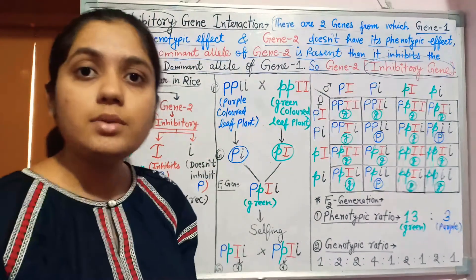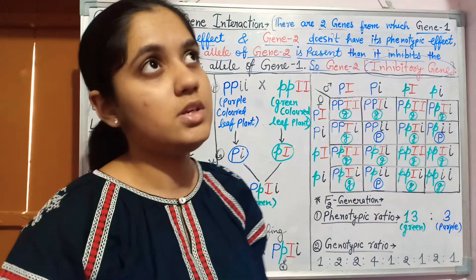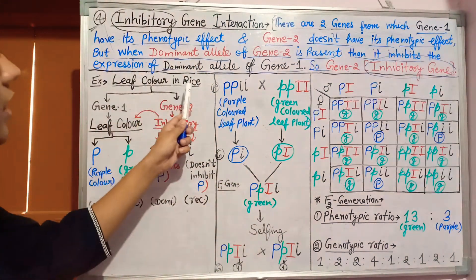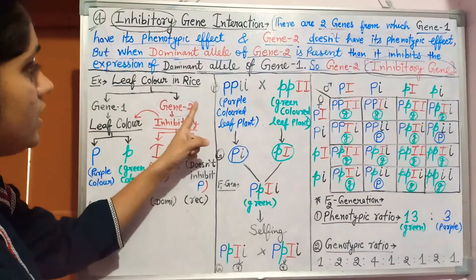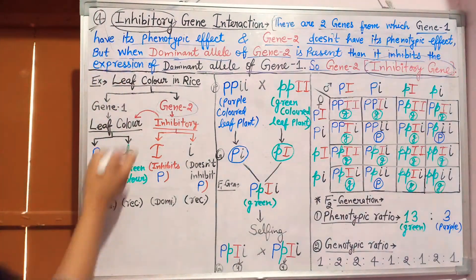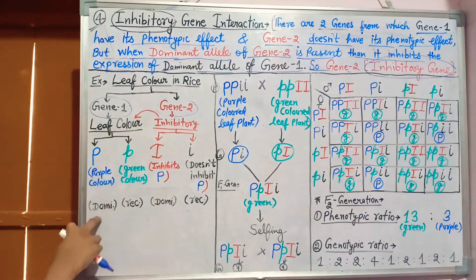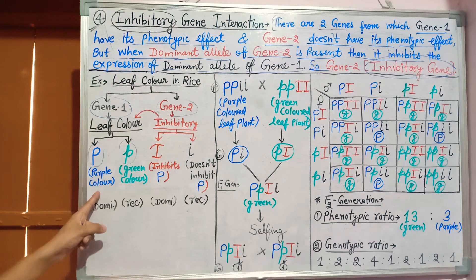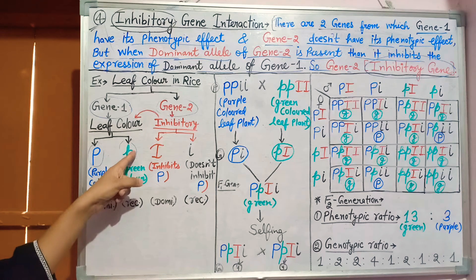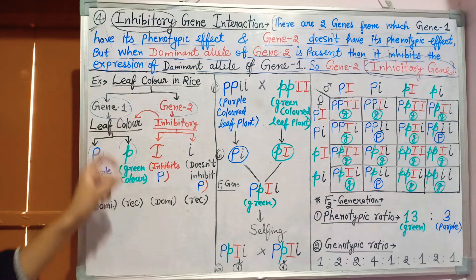We can understand this through the example of leaf color in rice — Oryza sativa, which belongs to the family Poaceae or Gramineae. In rice leaf color, one character is controlled by two genes. Gene two does not have any phenotypic effect but performs inhibition. Gene one, responsible for leaf color, has two alleles: the dominant allele capital P produces purple color, and the recessive small p produces green color.